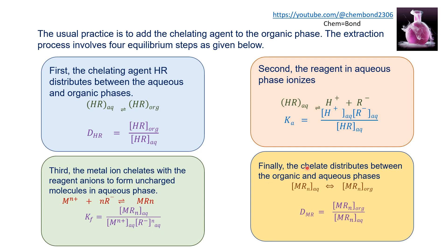The final step is the chelate distribution between organic and aqueous phases. The chelate produced in the aqueous phase moves toward the organic phase, distributing itself between the two phases until equilibrium is established. The distribution ratio of the chelate equals the chelate concentration in the organic phase divided by the chelate concentration in the aqueous phase.